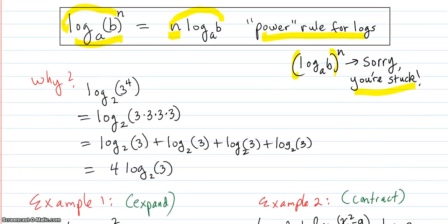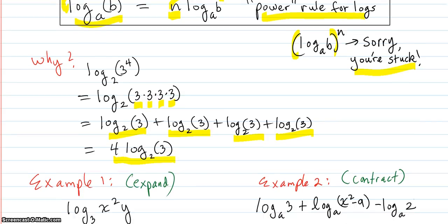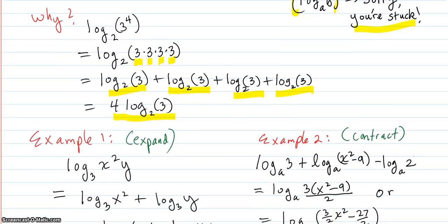Why does this work? Consider log base 2 of 3 to the fourth. That's log base 2 of 3 times 3 times 3 times 3. Using the product rule, you break it up as a sum: log base 2 of 3, four times, which equals 4 times log base 2 of 3. That's a good way to remember it.